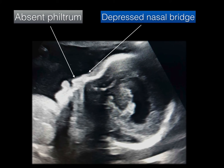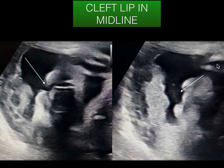A few more findings always associated with holoprosencephaly are facial anomalies. Always look for the nasal bridge, nasal bone, cleft palate, and the lips. Here you can see the lower lip is fine, whereas the upper lip in the midline — this is the mid-sagittal plane — shows a deficiency. The nasal bone is very small and there is a depressed nasal bridge. You can also see a large midline cleft lip due to absent philtrum, visible in the axial plane.